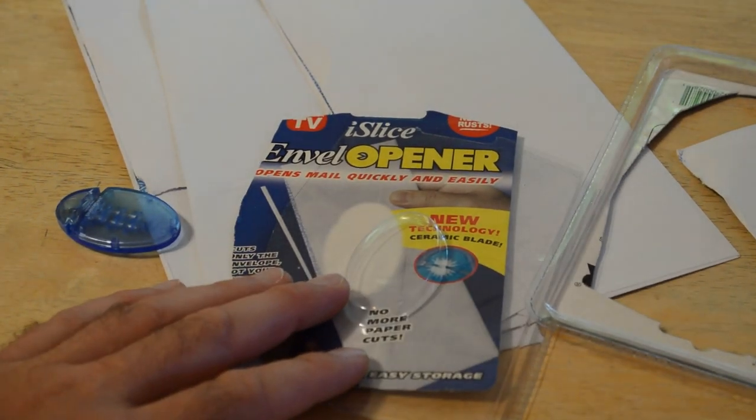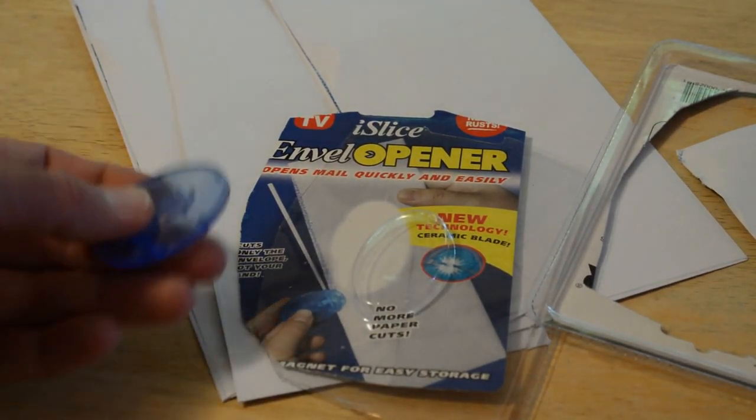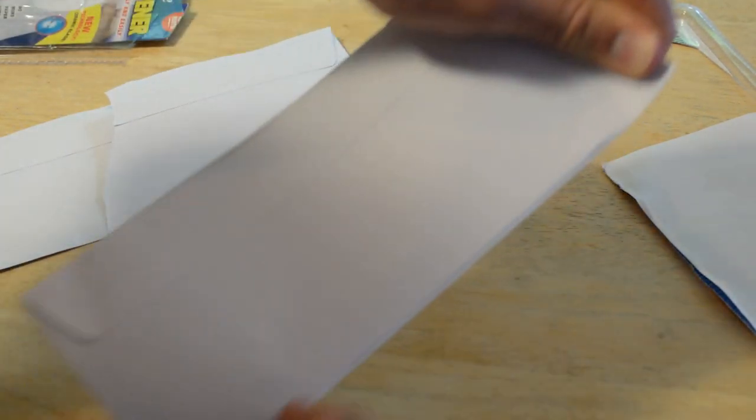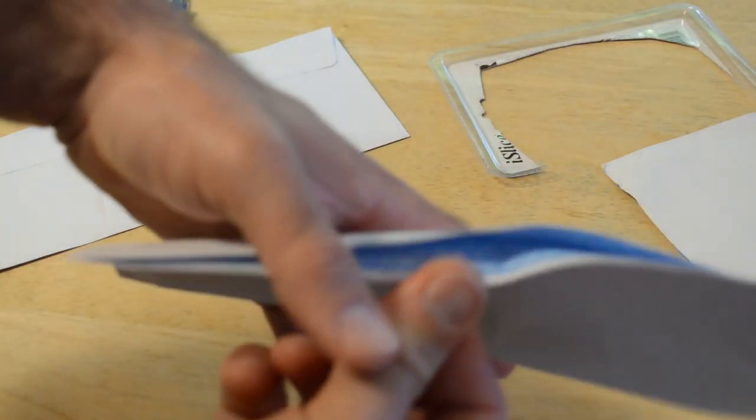All right. So to recommend the As Seen on TV, I slice envelope opener. Like I mentioned, let me just show you close up. What I mean is you kind of hold it like so. Get it started. And then once you get it started, it makes a nice cut in the envelope. You kind of get it started. There's a little slot right here. You kind of pinch it and open the letter like so.